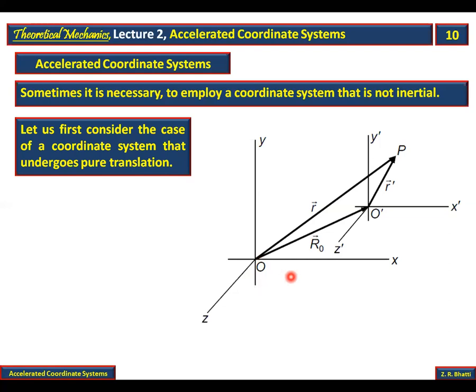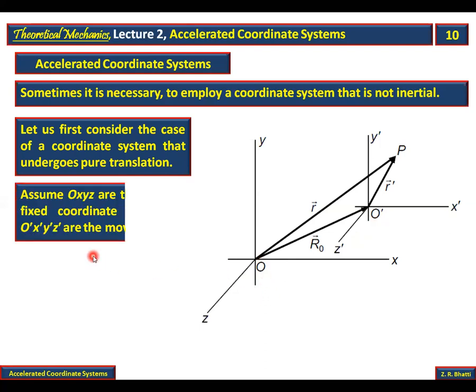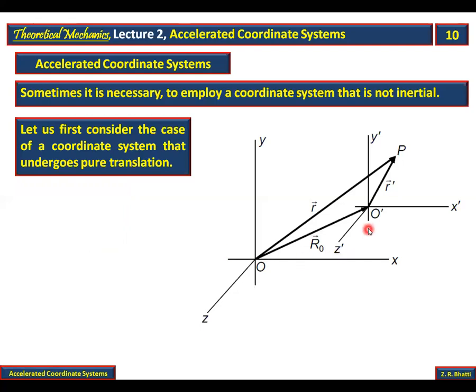Obviously, O-dash is the new origin which appears as a result of the translation. This gives us a new translated coordinate system.